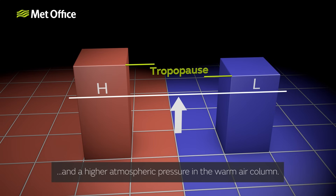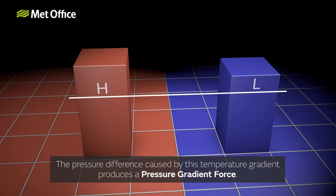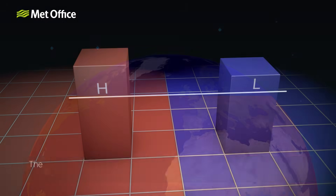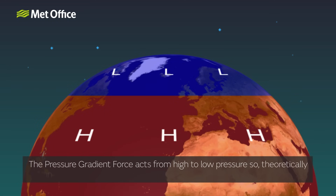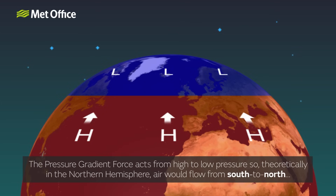The pressure difference caused by this temperature gradient produces a pressure gradient force. The pressure gradient force acts from high to low pressure, so theoretically in the northern hemisphere air would flow from south to north.